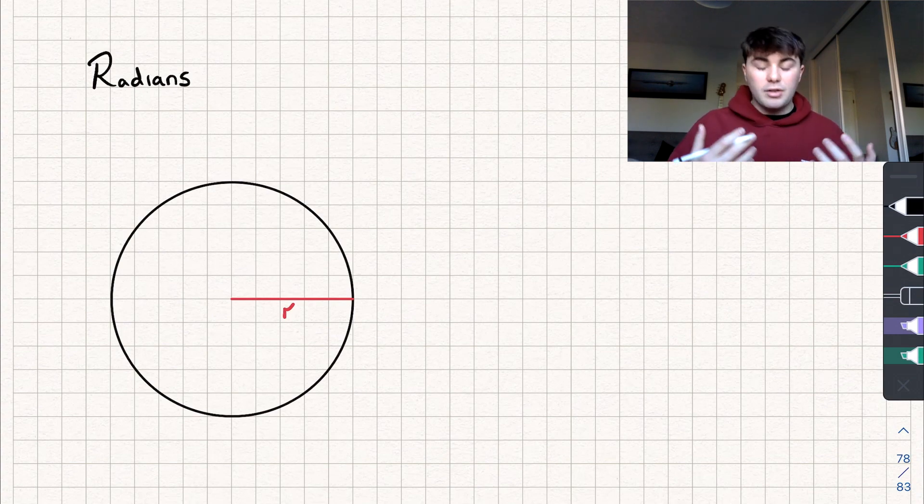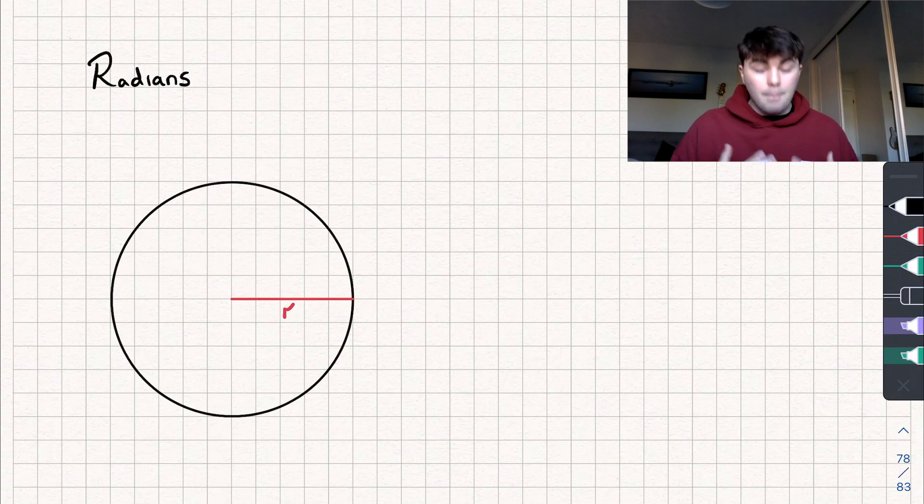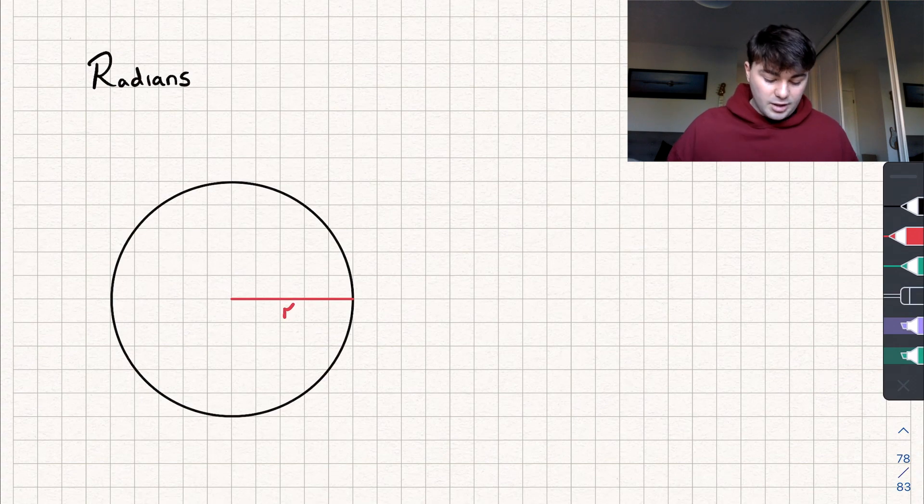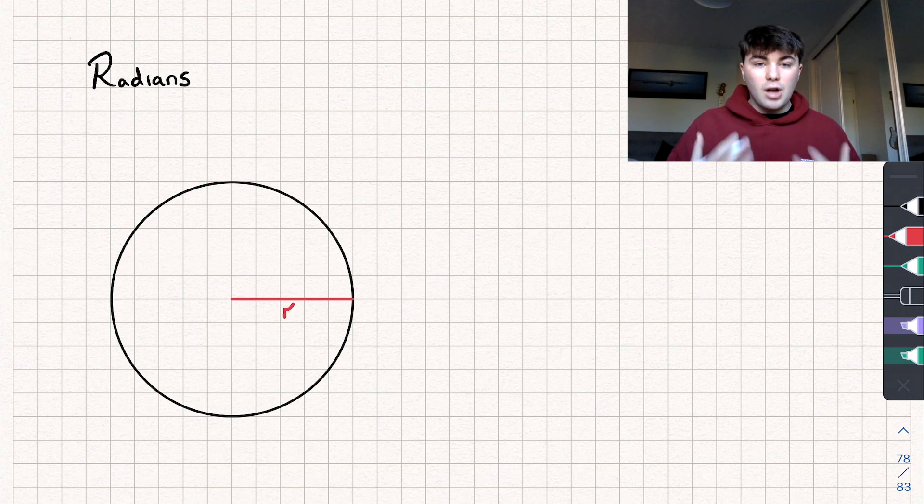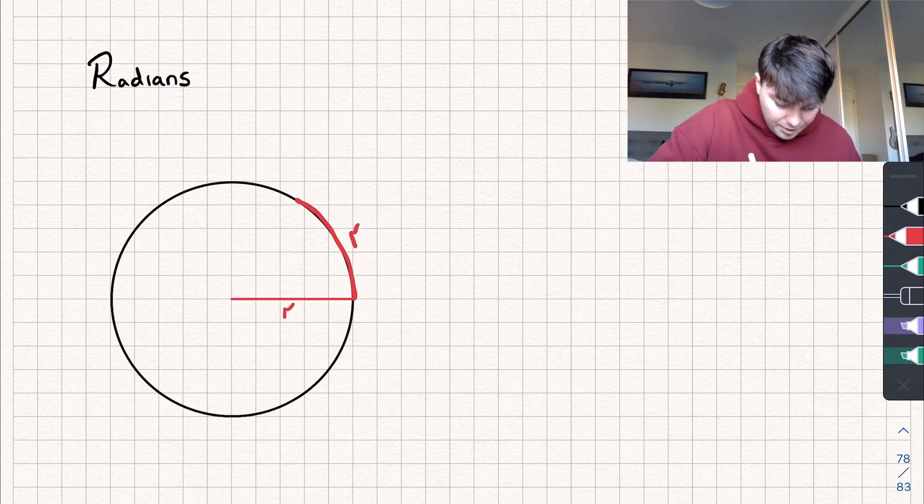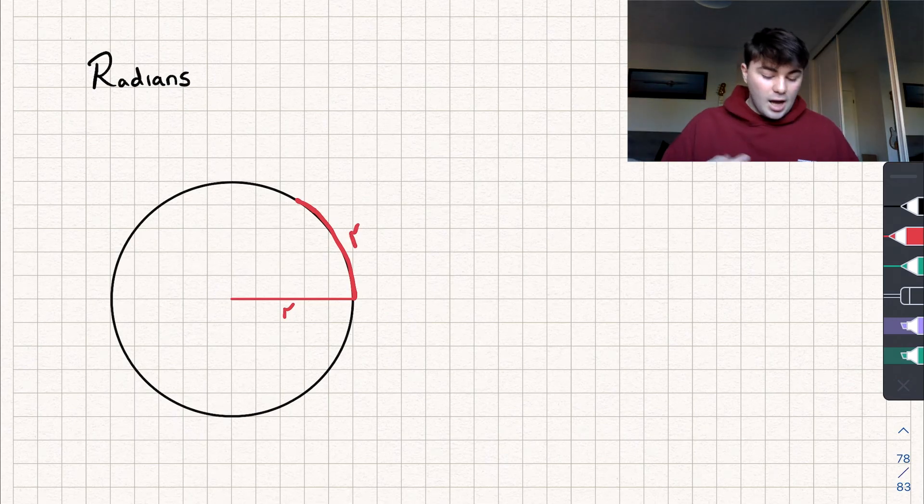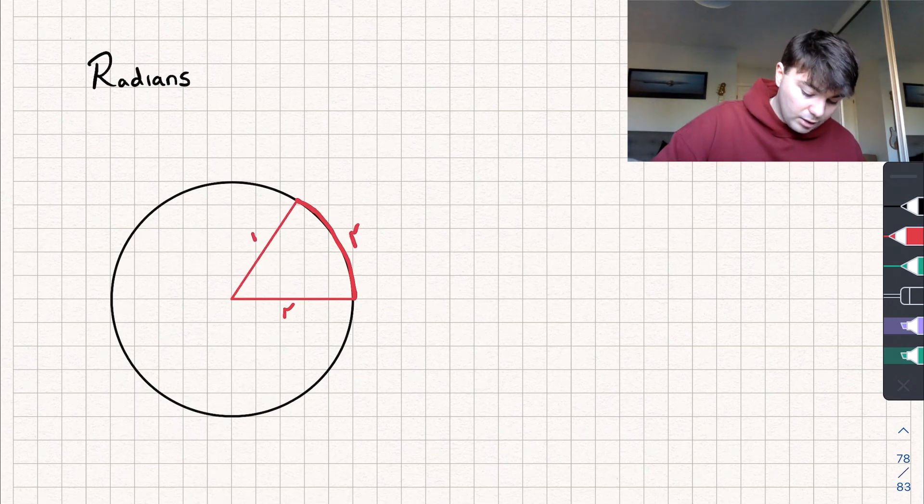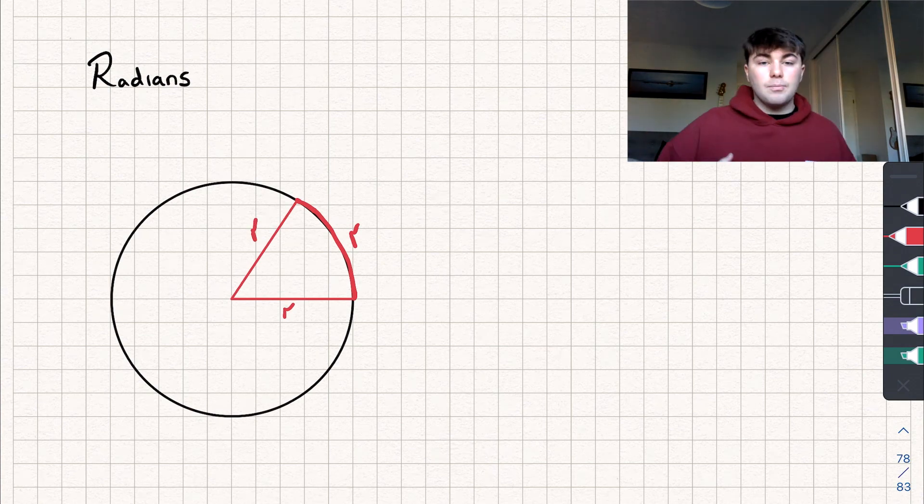But someone else came along and said I think we can approach this a bit more rationally, I think there's a better way to measure angles, and so they created the radian. The way we define a radian is like so: if we have a length r which is the radius of a circle, I'm now going to draw an arc on the circumference that is also length r. I'm going to connect it up to another radius, so we've got a shape with three sides all of length r.